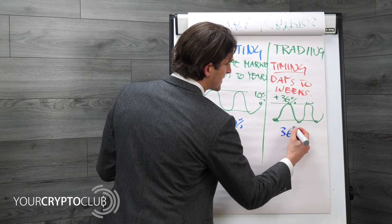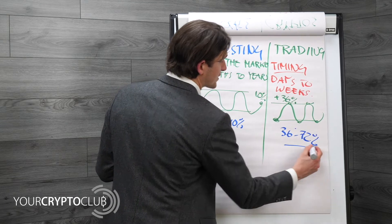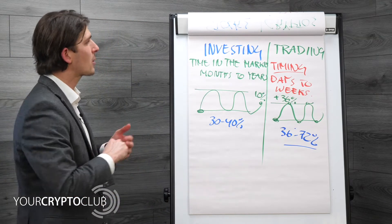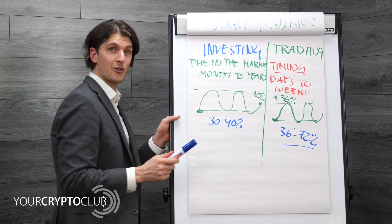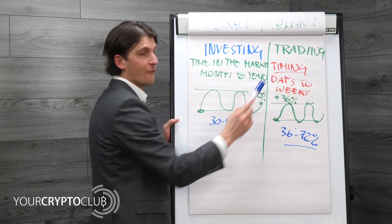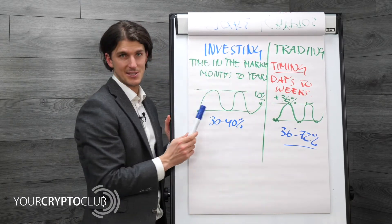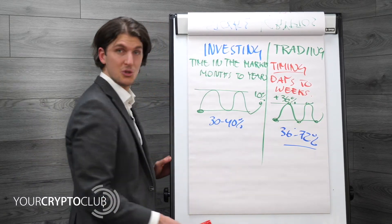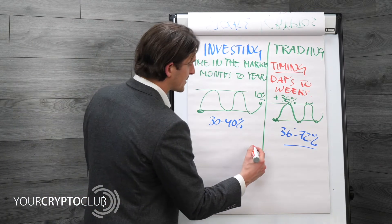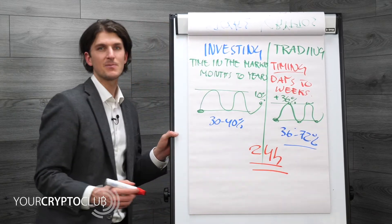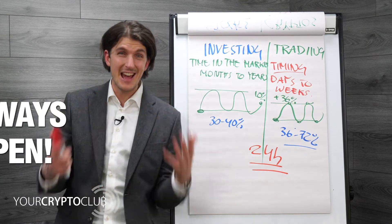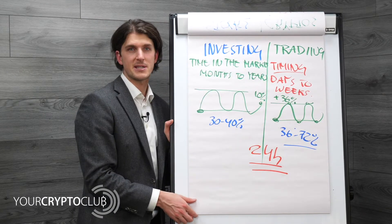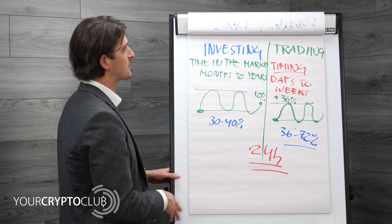With trading, you could make anywhere between 36% and 272% — it depends on your skill level. You might make 3% to 4% per month by trading the volatility. The key difference between trading and investing is just frequency: with trading you buy and sell much more often. The crypto market is open 24 hours a day, seven days a week — it never closes. And there are thousands of cryptocurrencies to trade and invest in.